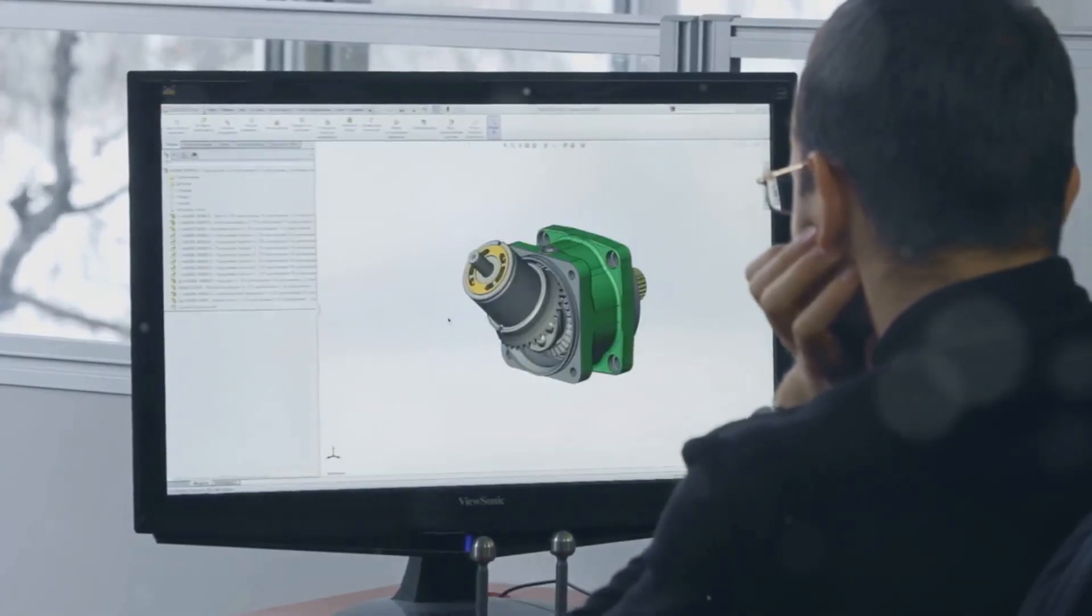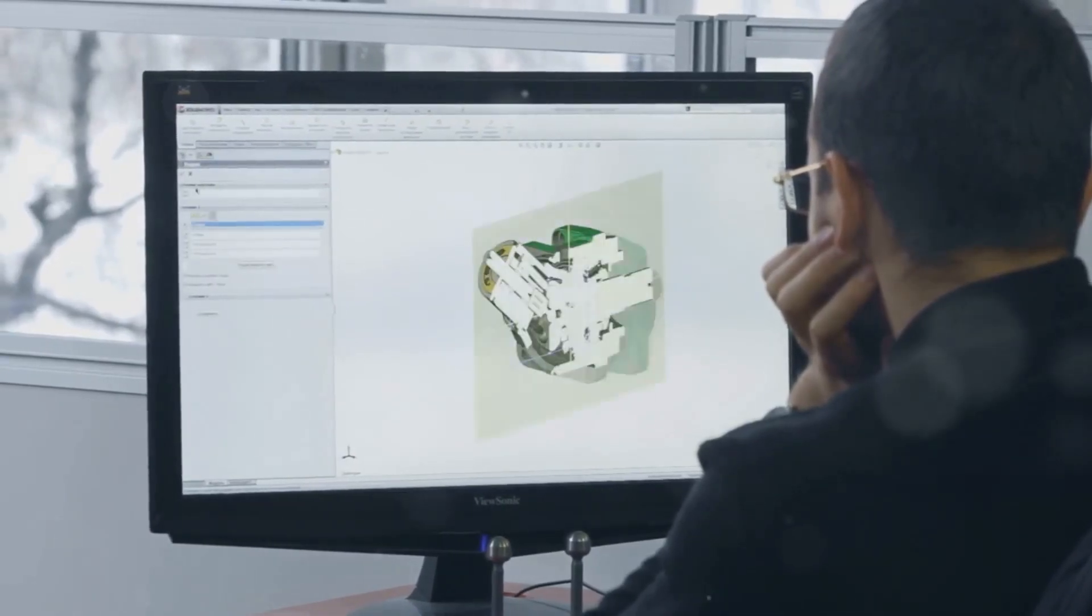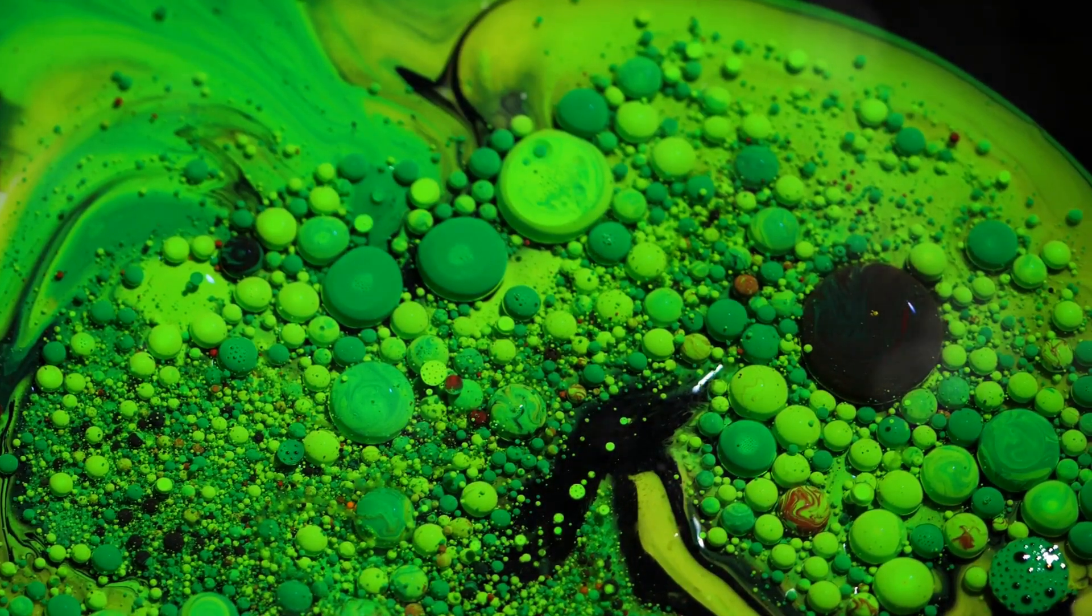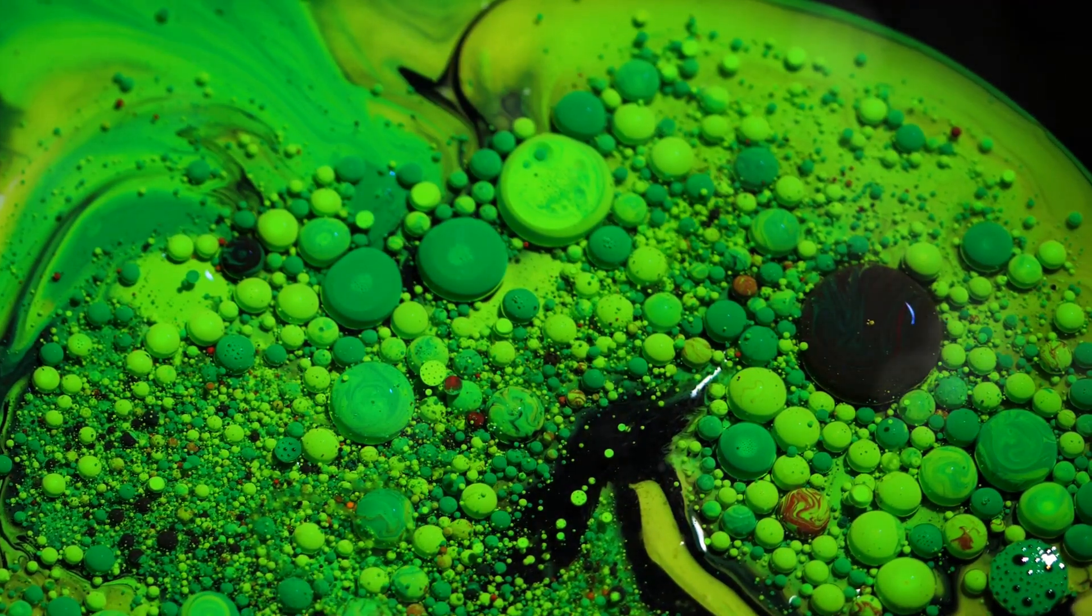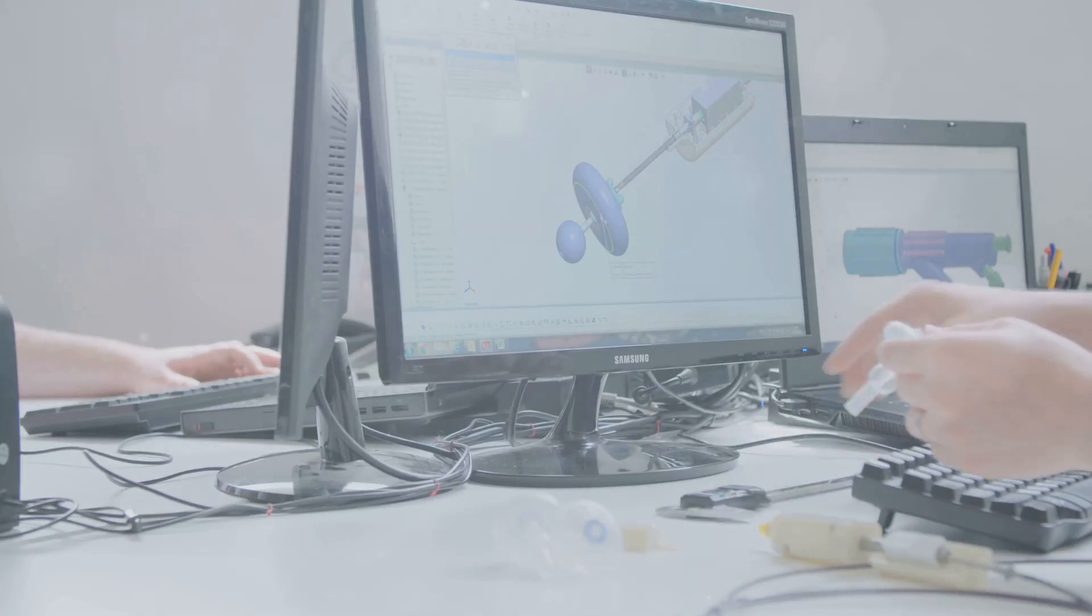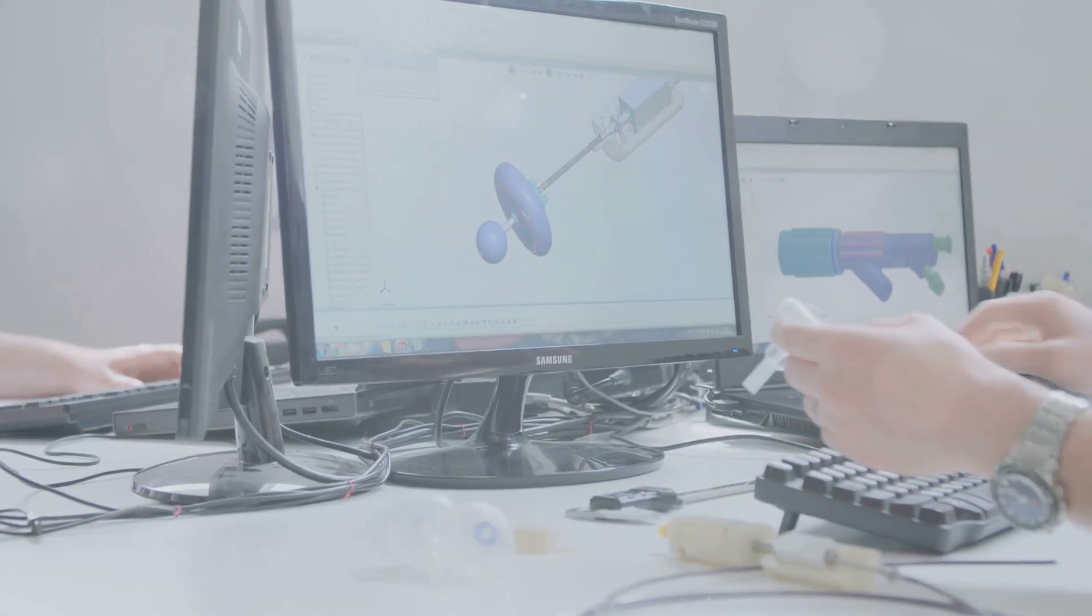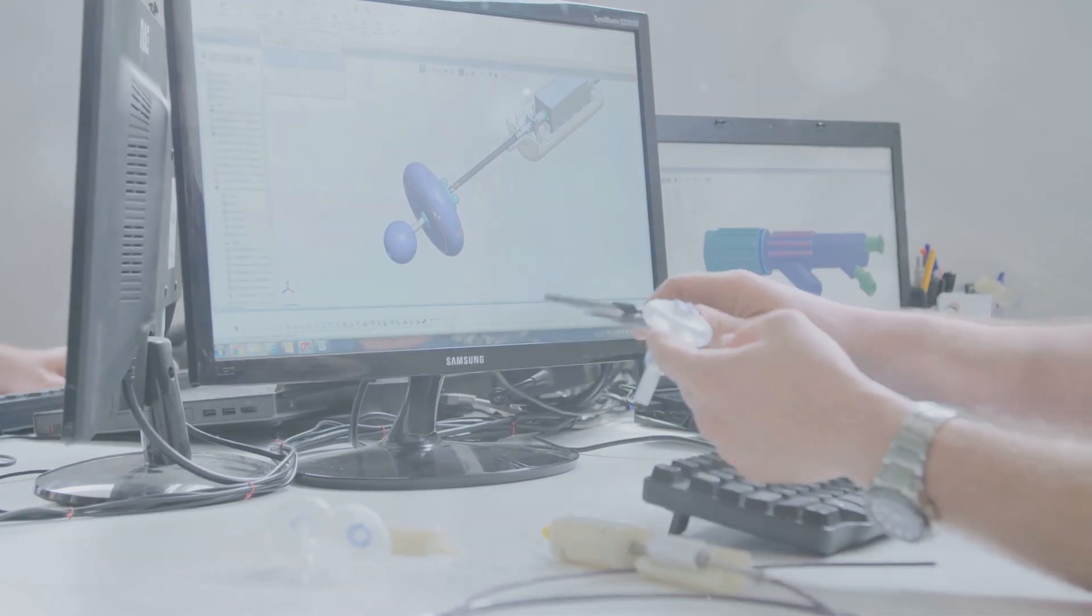Next, we divide this intricate geometry into smaller, manageable cells, a process known as meshing. This mesh acts as a grid, allowing Fluent to solve complex equations governing fluid flow and electrochemical reactions within each cell. Finally, we breathe life into our virtual electrolyser by specifying the properties of the materials involved, the operating conditions and the electrochemical reactions taking place.